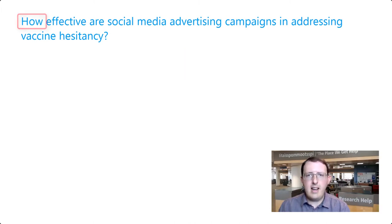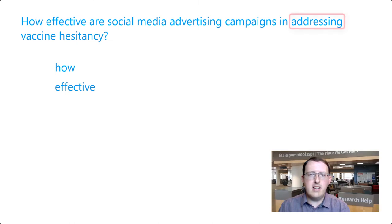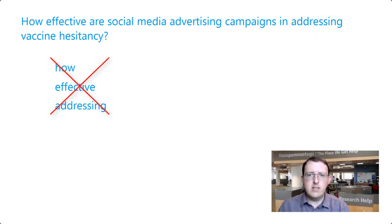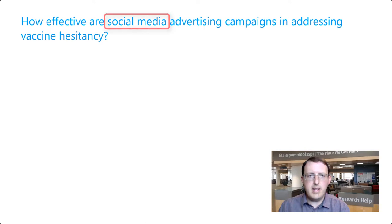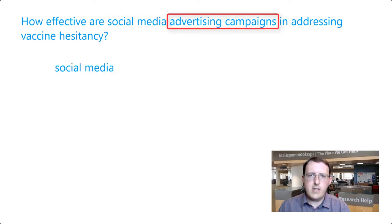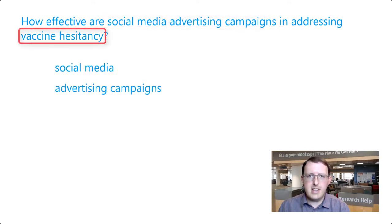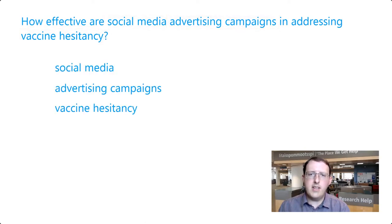Words like 'how,' 'effective,' and 'addressing' are not core to our topic and should be left out of a keyword search. Social media, advertising campaigns, and vaccine hesitancy, on the other hand, are core concepts in our research topic and should be part of our search.